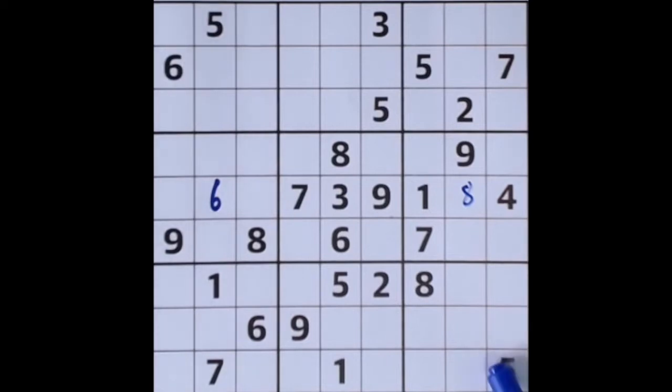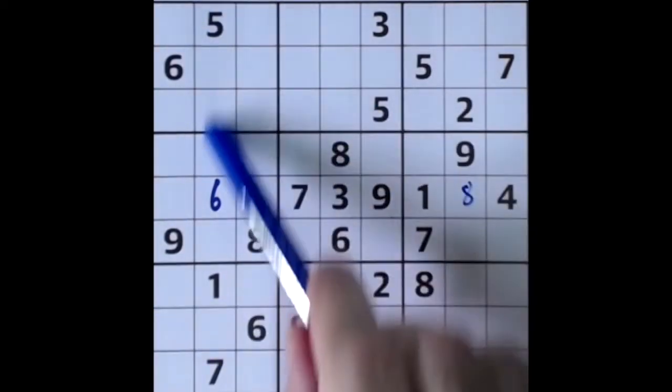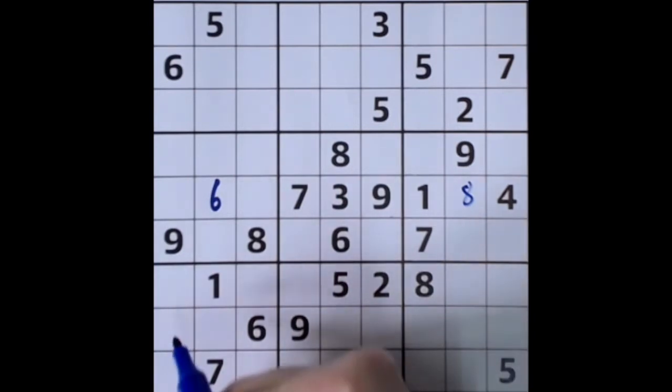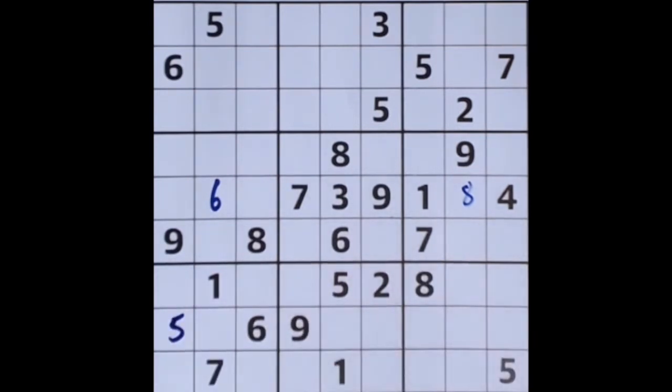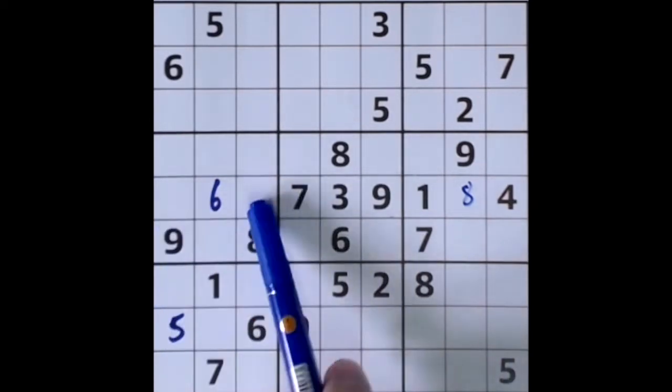5 blocks across this row, 5 blocking across this row and 5 blocking down here gives me a 5 in that square there.